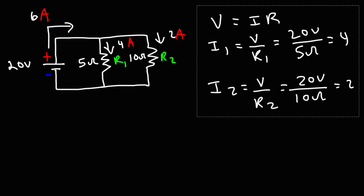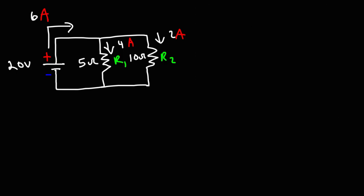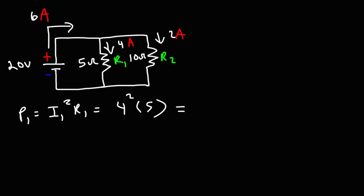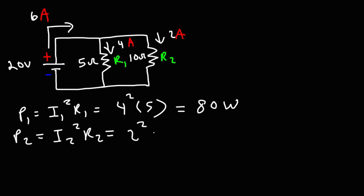Now let's calculate the power dissipated by each resistor. Starting with the first one, it's I1 squared times R1. I1 is 4 amps and R1 is 5 ohms — 4 squared is 16, times 5 is 80 watts. For the second resistor, it's I2 squared times R2: 2 squared times 10 ohms — that's 4 times 10 — so that's 40 watts.